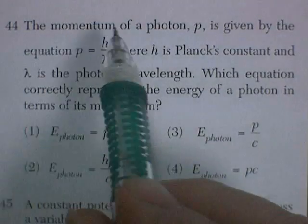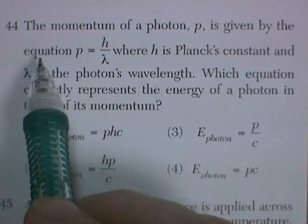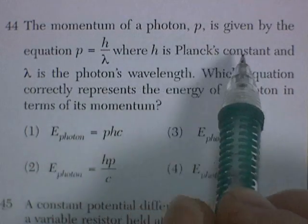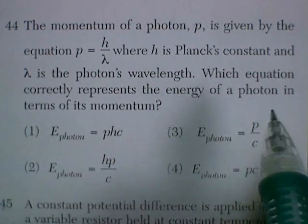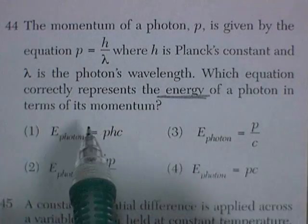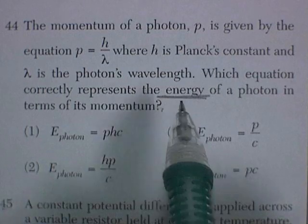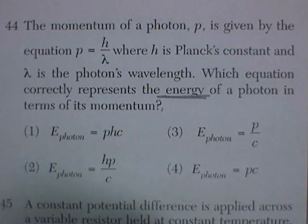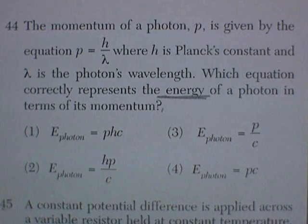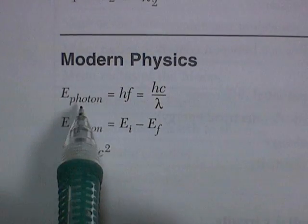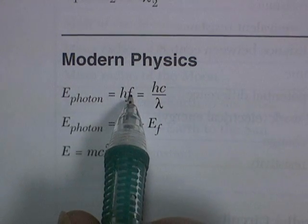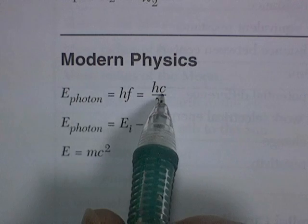Question 44. The momentum of a photon, P, is given by the equation P equals H over lambda, where H is Planck's constant, and lambda is the photon's wavelength. Which equation correctly represents the energy of a photon in terms of its momentum?